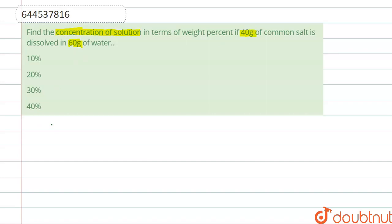So here the mass of solute, that is salt, the mass of salt is given which is 40 grams. And mass of solvent, that is water, the mass of water which is 60 grams.